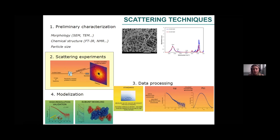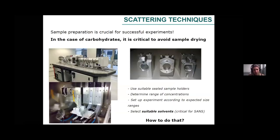It is also very important to know the chemical structure of our sample — we can typically use FTIR or NMR for carbohydrates. It would also be good to have some idea of particle size, as that determines what type of technique to use. Once we have some information on our sample and start scattering experiments, sample preparation is going to be very important for a successful experiment. In the case of carbohydrates, it is critical to avoid sample drying, and we need to use suitable sealed sample holders. Here you have an image showing some of the sample holders typically used for a SANS experiment.